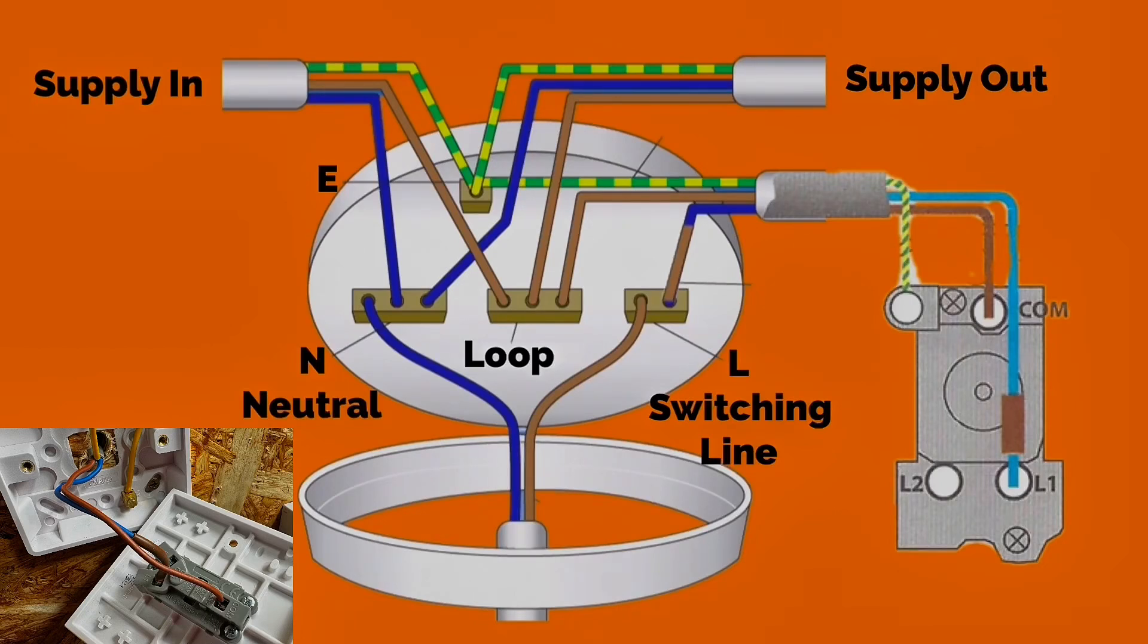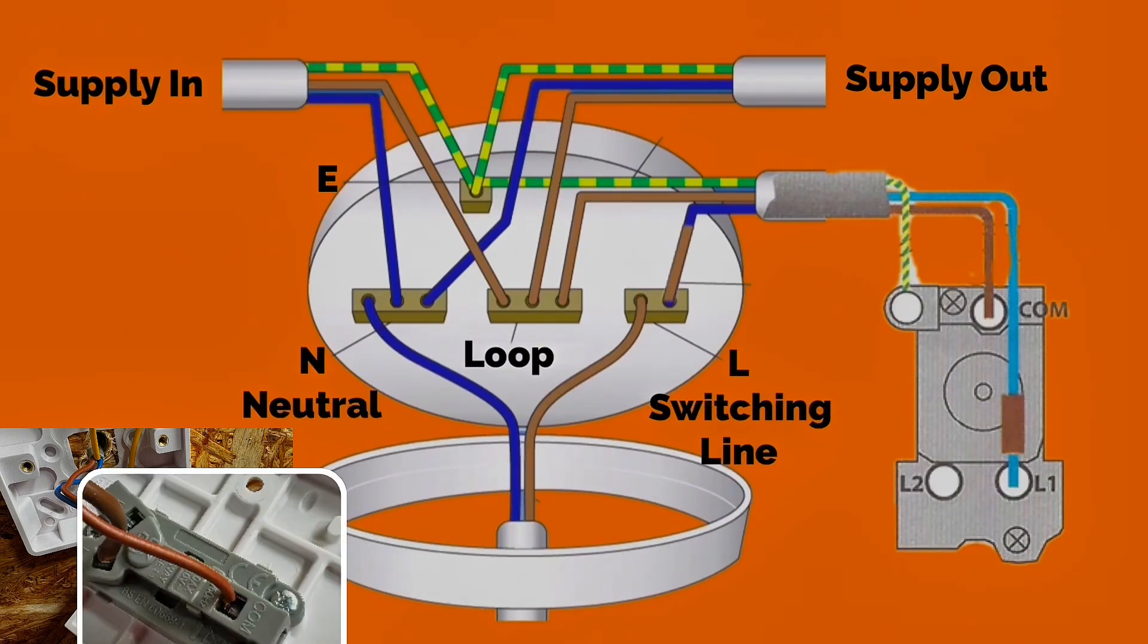We take a permanent line from the looping terminal in the center, which goes down to the one-way switch and is connected into the common terminal. We have a switching line conductor returning.